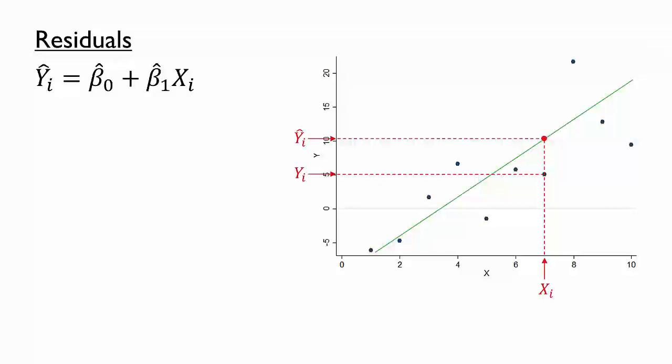Presumably, we'd like these differences to be relatively small. Accordingly, we define a residual for an observation as the difference between the actual and predicted value.